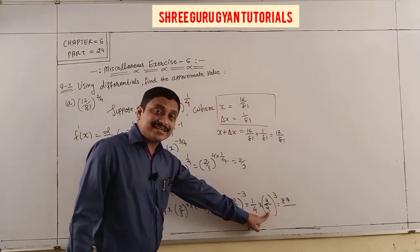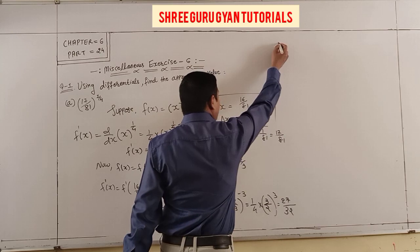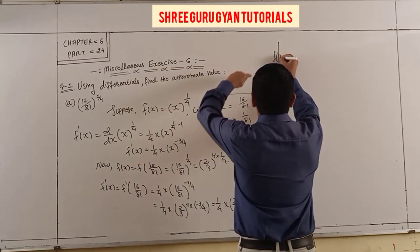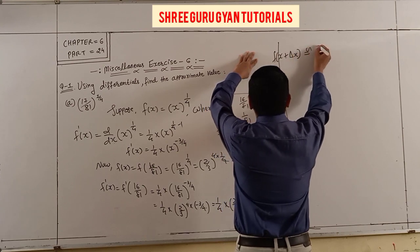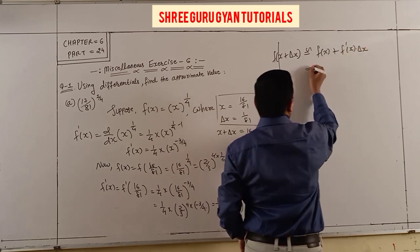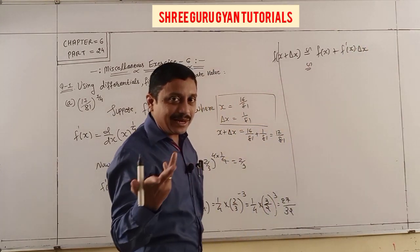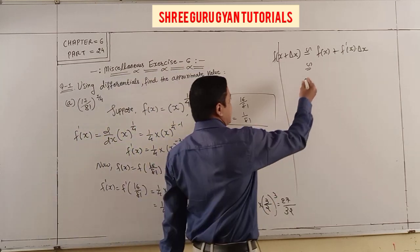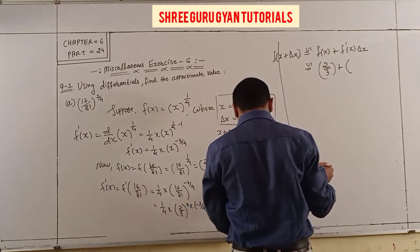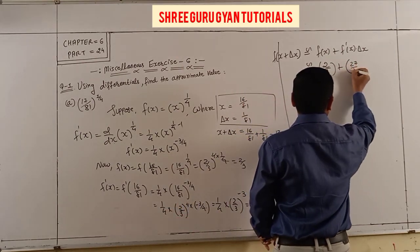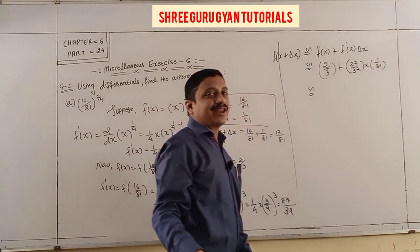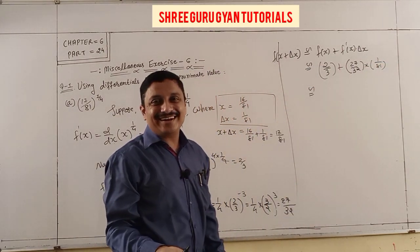2³ = 8, so 8×4 = 32. Now applying the approximate formula: f(x + Δx) ≈ f(x) + f'(x)·Δx. Here f(x) = 2/3, f'(x) = 27/32, and Δx = 1/81. Utilize your calculator to get the answer.